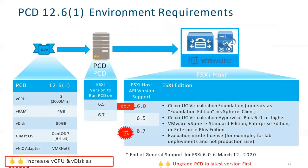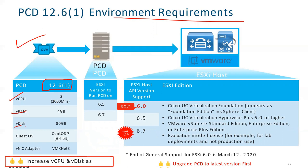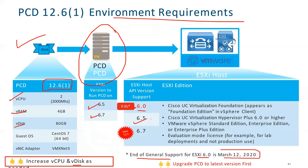For PCD requirements — for example, a 12.6 environment — you need an OVA file to deploy it. The virtual CPU, virtual RAM, and disk are specified; you can increase virtual CPU and disk depending on requirements. The ESXi version to run PCD on should be 6.5 or 6.7 — previously 6.0 was supported, but end of general support for ESXi 6.0 was March 12, 2020, so it is now end-of-life.